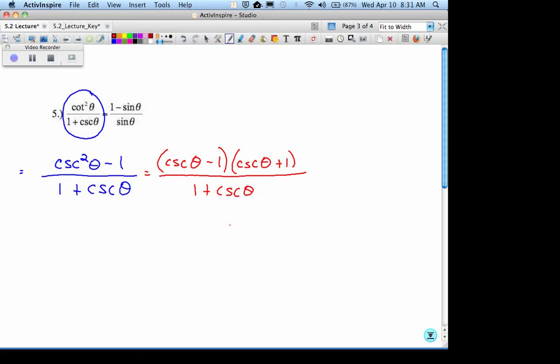What I did is I factored the top. It's what's called the difference of squares. Cosecant minus 1, cosecant plus 1 are the two factors. This is a little bit different in that when you look at cosecant plus 1 on top, remember addition is a commutative property. So, these are really the same two factors. So, I can get rid of this whole thing with this whole thing.